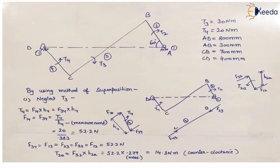Firstly we will neglect T3 — we will assume that T3 is not present and only T4 is acting on the system — and then we will find the value of T2. So we will first draw the free body diagrams. This is CD, which is body number 4 or link 4. We draw a line parallel to CD at some distance. We know the direction of torque is counterclockwise, so the two forces that will produce the couple will be in the clockwise direction.